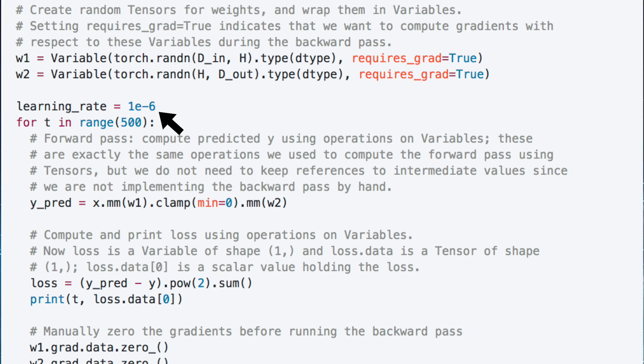We'll define a learning rate, then we can begin our training loop for 500 iterations. During the forward pass, we can compute the predicted label using operations on our variables. MM stands for matrix multiply, and clamp clamps all the elements in the input range into a range between min and max.